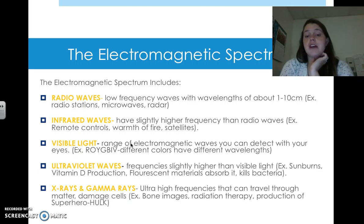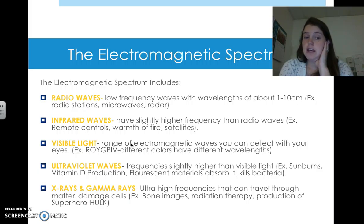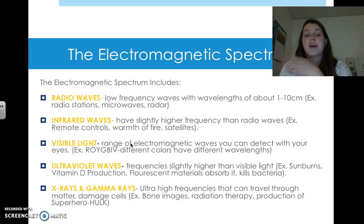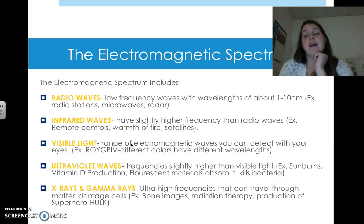Visible light is the range of electromagnetic waves that you can detect with your eyes — all the different colors and color variations you can see. Roy G. Biv represents all the different colors of the rainbow that we can see. Each of those colors has a different wavelength, and even each variation of those colors has a different wavelength, which is why we see and interpret them differently in our brains.